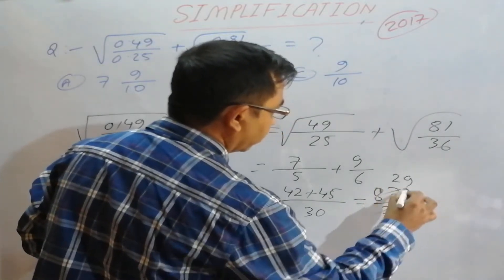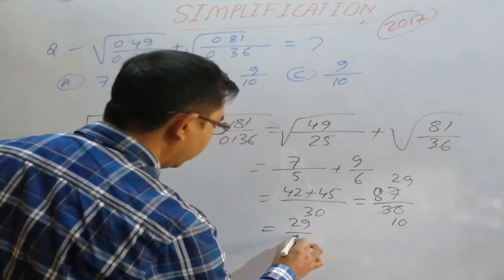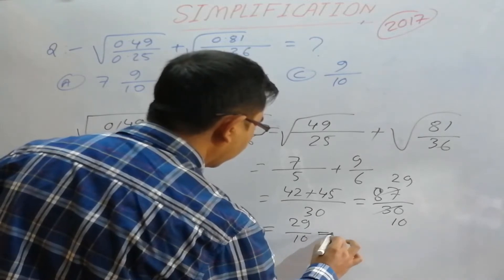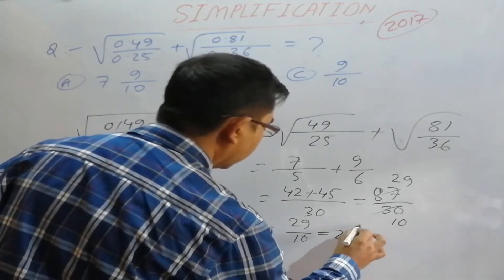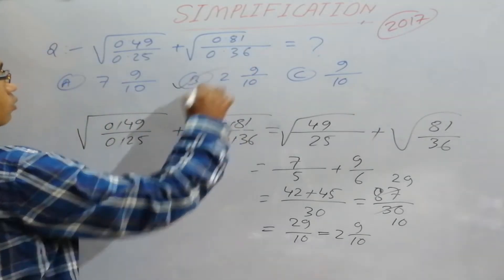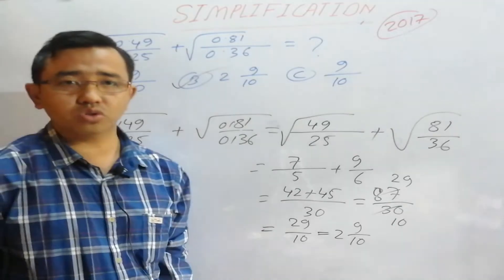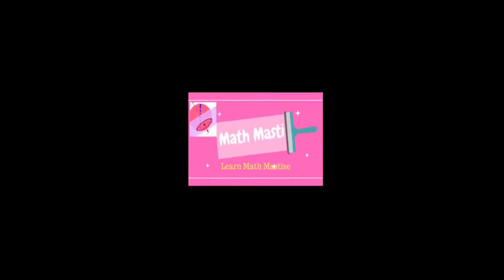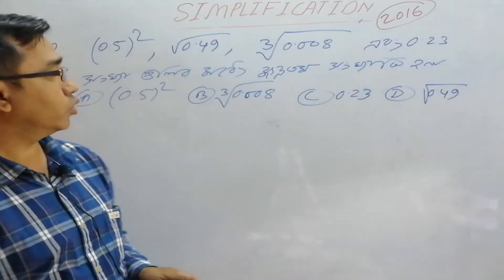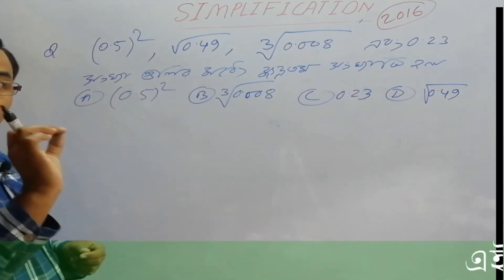This equals 29 by 10, which is the answer. So this question gives us 2.9 as the final answer.